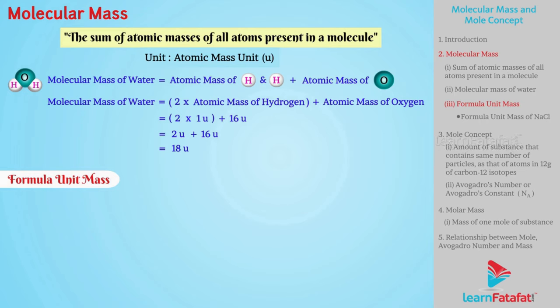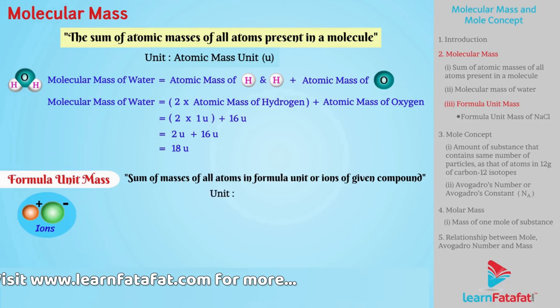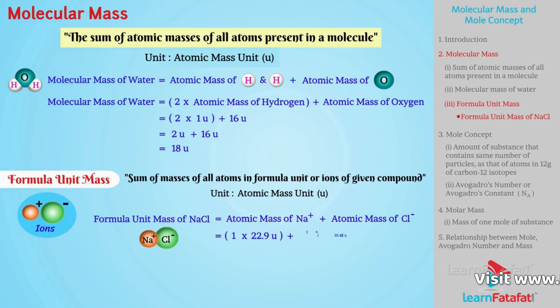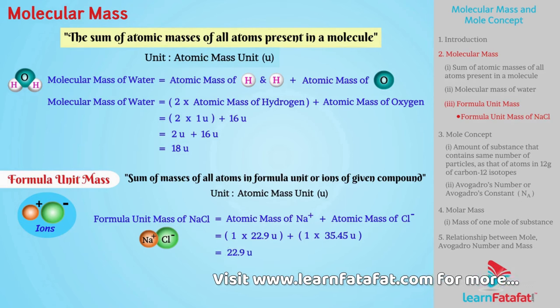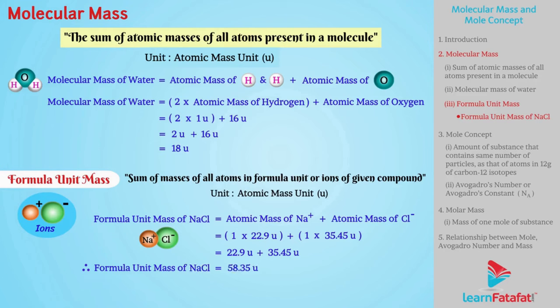Formula unit mass. If particles of compound are ions, then masses are calculated as formula unit mass. It is the sum of all atoms in formula unit or ions of given compound. It is also expressed in terms of atomic mass unit U. Let us calculate the formula unit mass of compound NaCl which contains ionic particles Na+ and Cl-. For this we need atomic mass of Na+ plus atomic mass of Cl-. Therefore, by putting the values 1 into 22.9 plus 1 into 35.45 which gives 22.9 plus 35.45. Therefore, we get formula unit mass of NaCl equals to 58.35U.